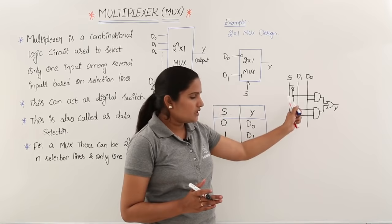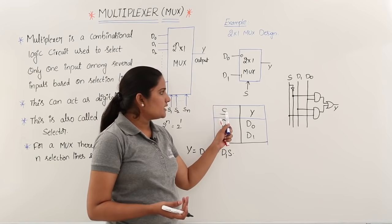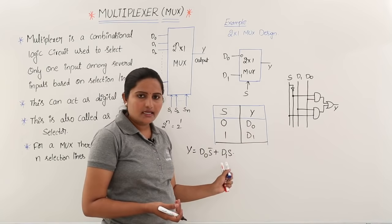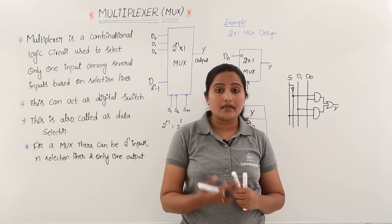This completes the design of the 2:1 MUX. In the same way we are going to design a 4:1 MUX and 8:1 MUX. For a 4:1 MUX, there will be 2 selection lines S1 and S0 with output Y determined accordingly. Problems related to MUXes in GATE will be discussed in the next classes.